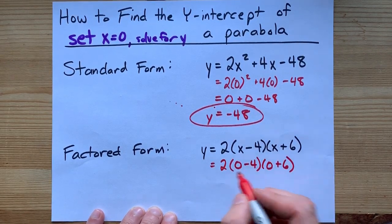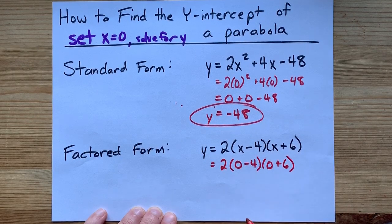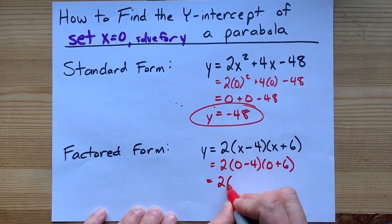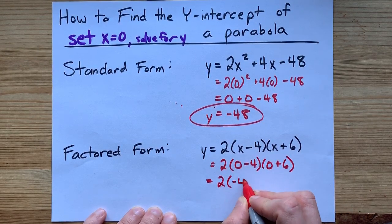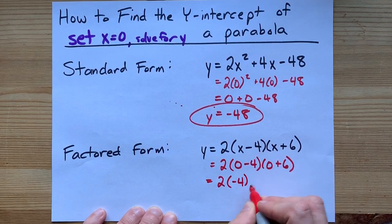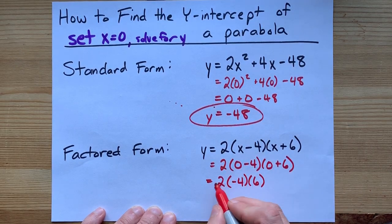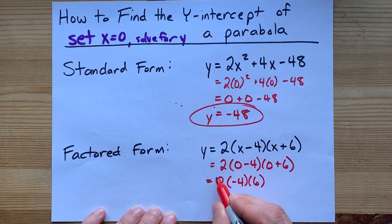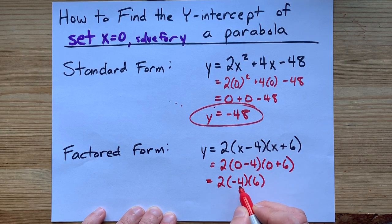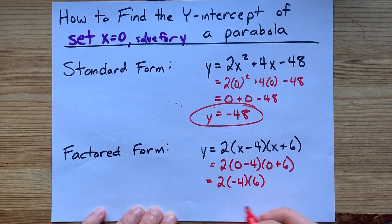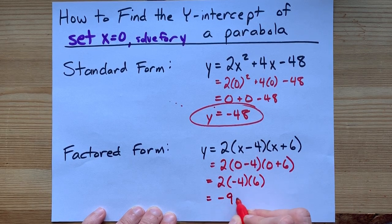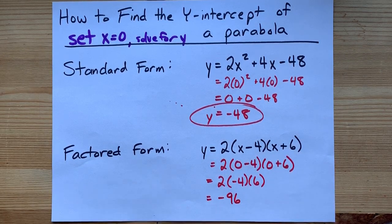Now you've got to do what's in brackets first, because that's how BEDMIS works. 2 times 0 minus 4 is negative 4. 0 plus 6 is 6. 2 times negative 4 is negative 8. Negative 8 times 6 is negative 96. Great! Looks good to me.